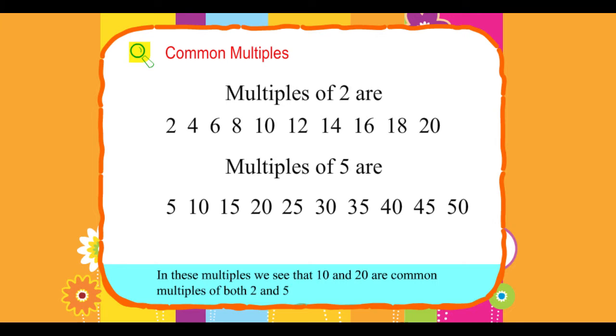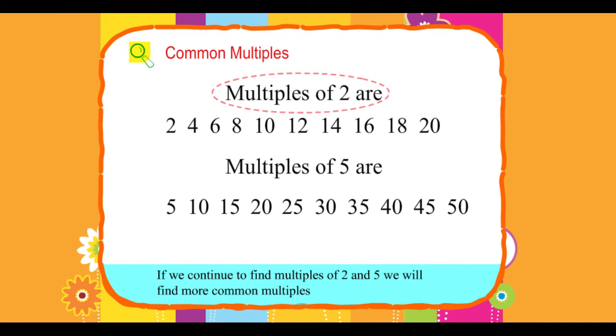In these multiples, we see that 10 and 20 are common multiples of both 2 and 5. If we continue to find multiples of 2 and 5, we will find more common multiples.